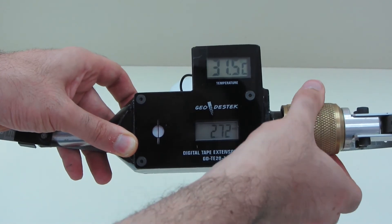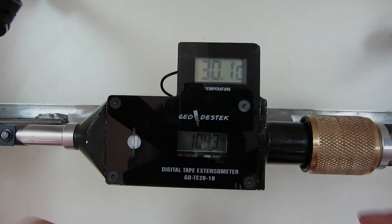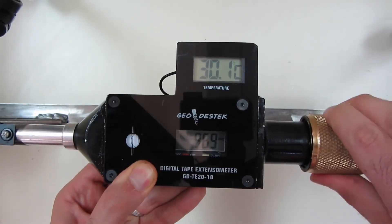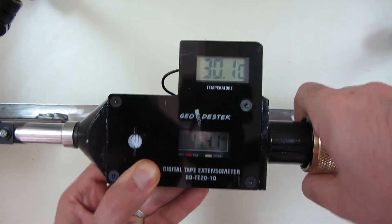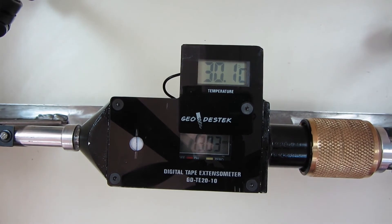The difference in each measurement with respect to the initial reference measurements are interpreted as relative displacement. Additionally, if preferred, temperature corrections can be applied on displacement measurements by using the temperature sensor located on Tapex.